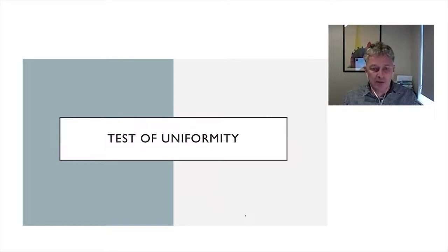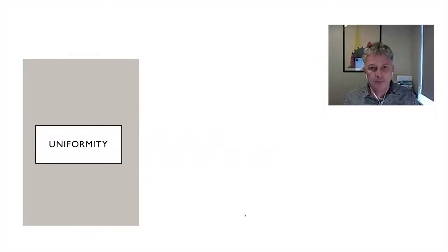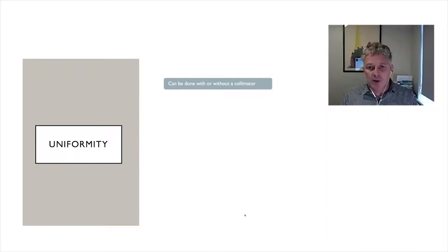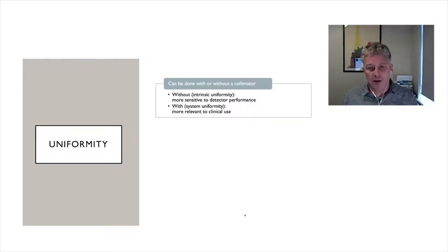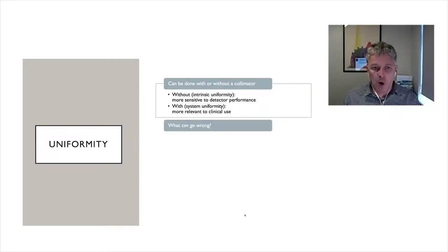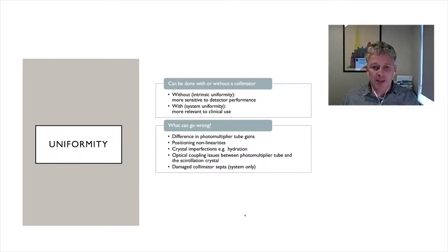Let's start with the test of uniformity. Uniformity is often done with or without a collimator. Without a collimator, it is more sensitive to detect performance issues. With a collimator, it is more relevant to clinical use. What can cause bad uniformity? It's important to consider what the underlying issues might be.